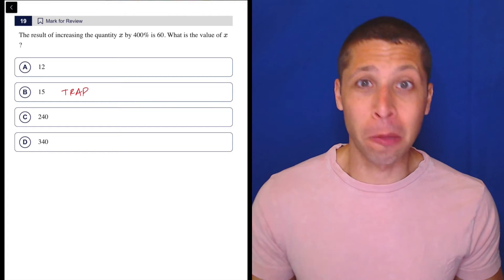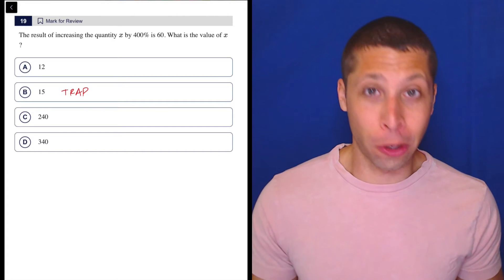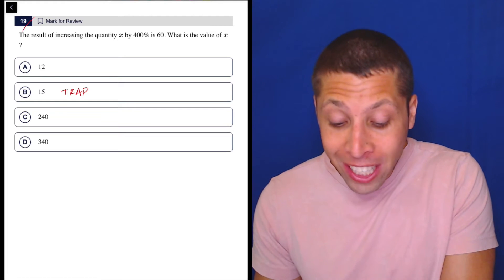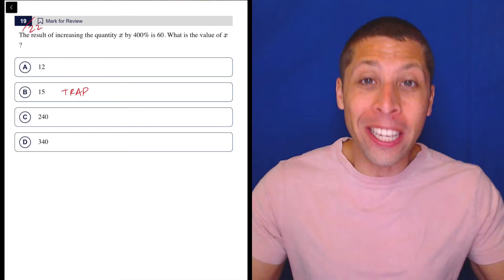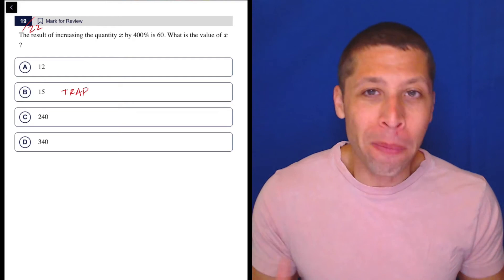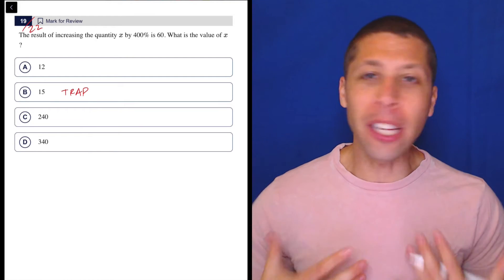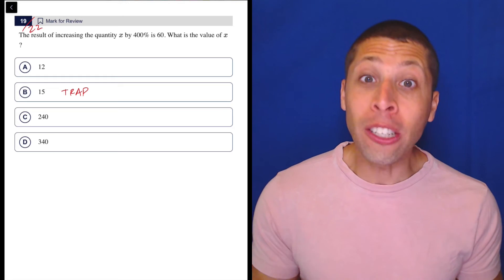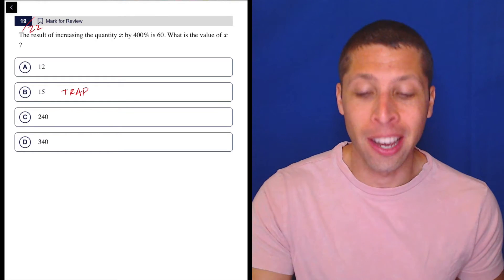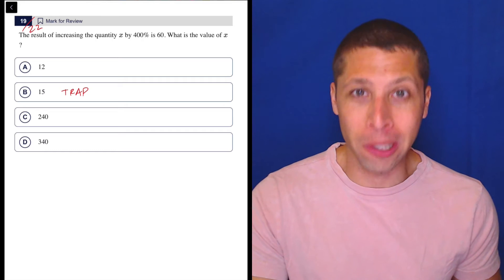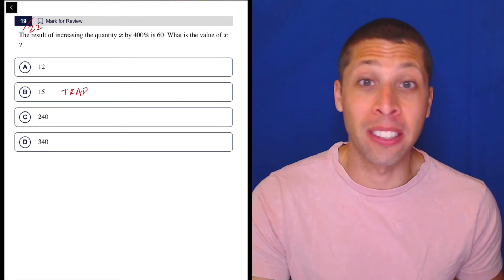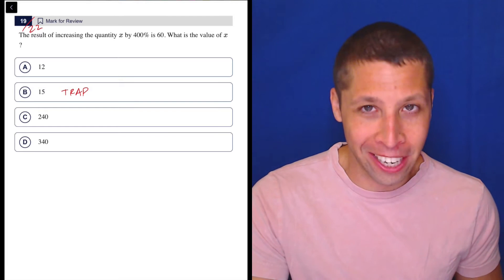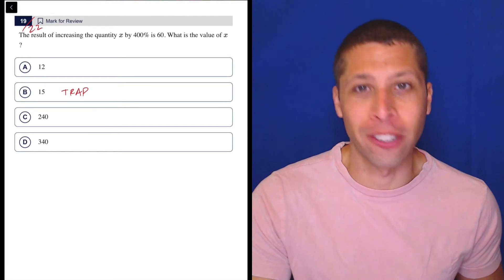Anytime the SAT tests percentages, you know that they're trying to trick you. Anytime they're testing percentages on a question 19 out of 22 in the hard module, you know they're messing with you. So any sort of intuition you have about this percentage question is wrong, or at least you should go into that process assuming it's wrong. We need formulas. We need a process that's not going to be susceptible to the kinds of traps that the SAT pulls every single time they test percentages in the hard module.